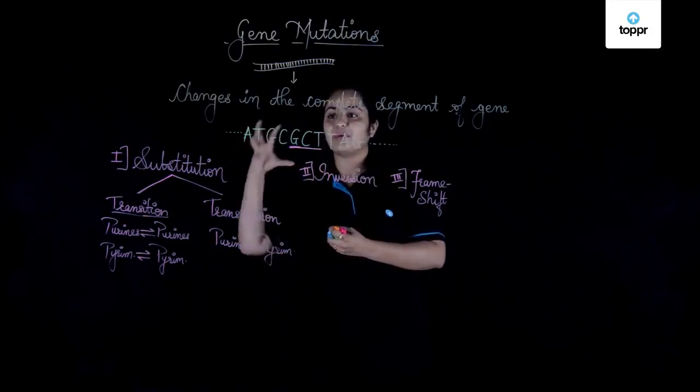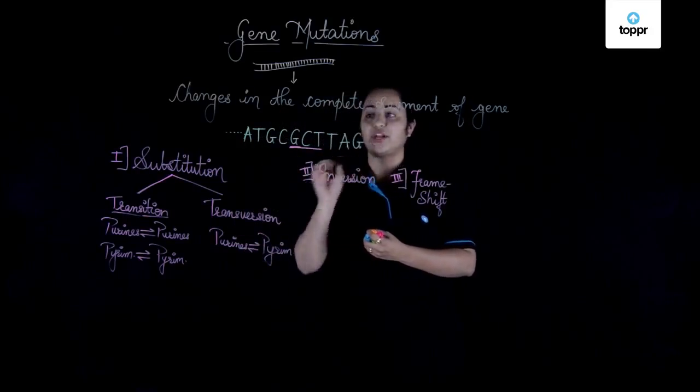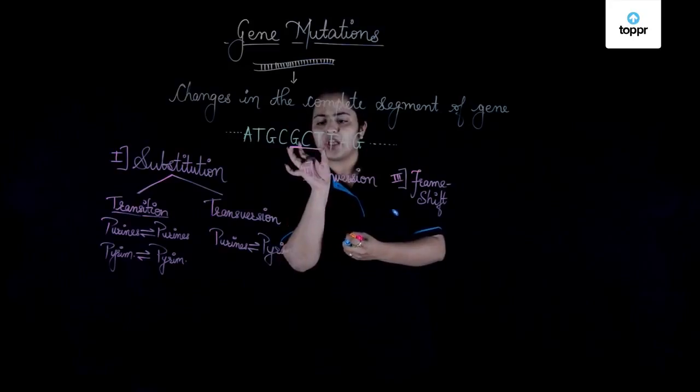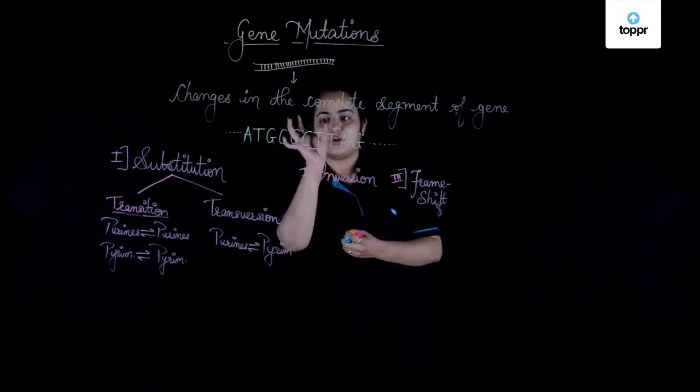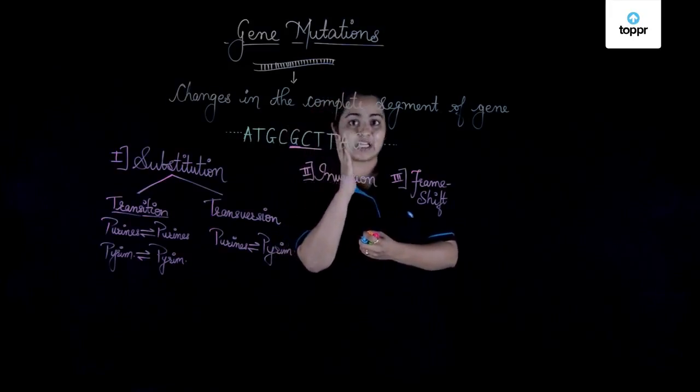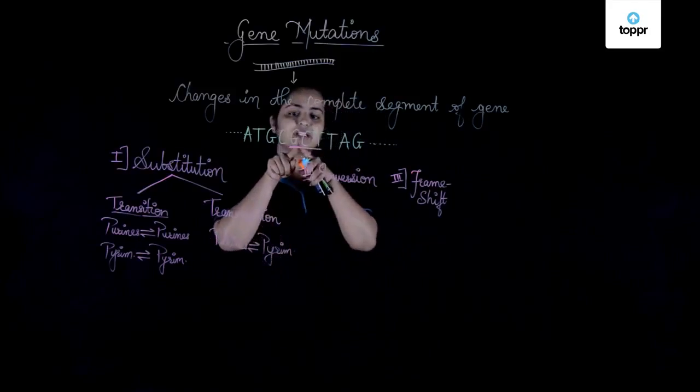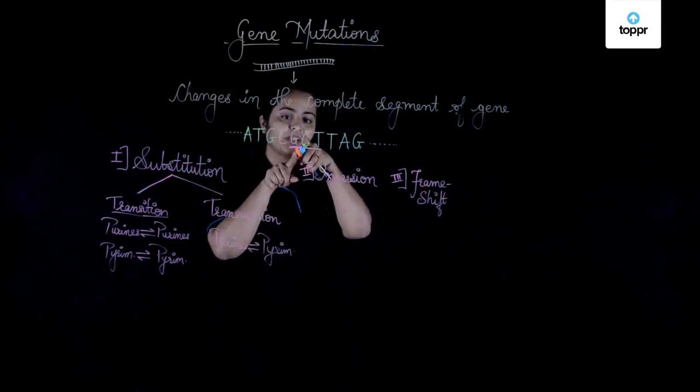We know that the enzyme will come and sit here and try to read this frame in terms of codons, correct? So now if this particular is my set of codons G, C, and T, what if there is one amino acid added in between?